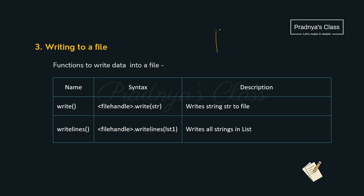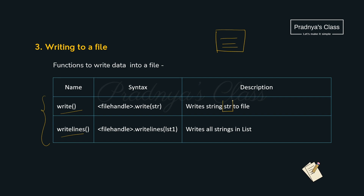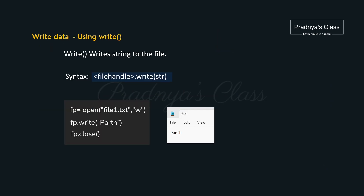Now the file is created. We need to write data to it. For that there are two options. The first is the write function and the second one is writelines. The write function writes a single string to the file, whereas writelines writes a list of strings. We will not concentrate more on writing data to the file because you will not get a question on it.